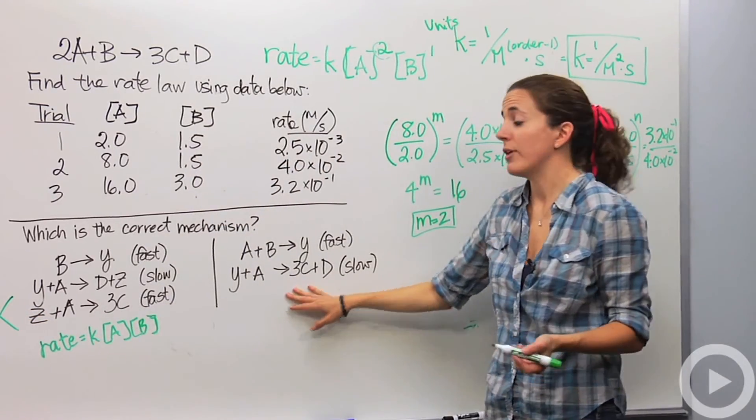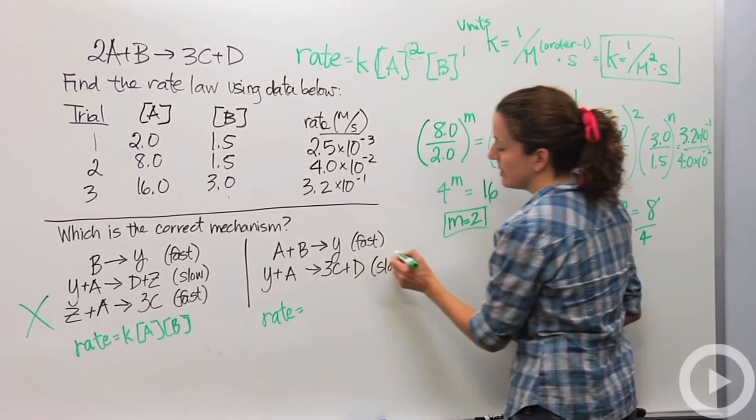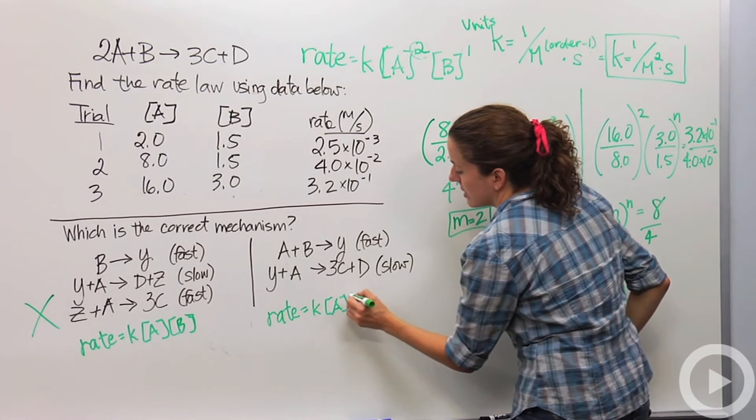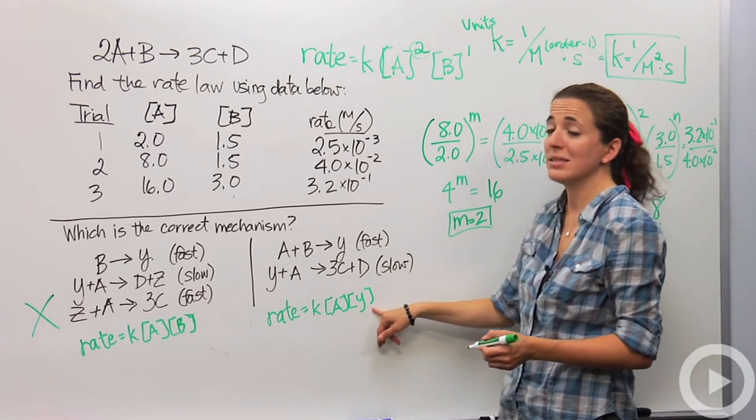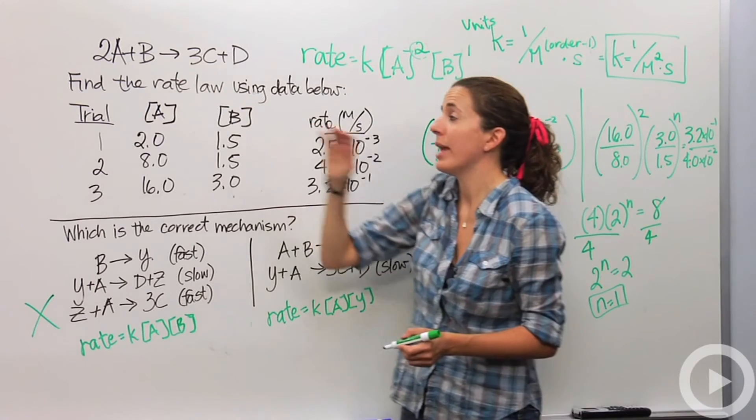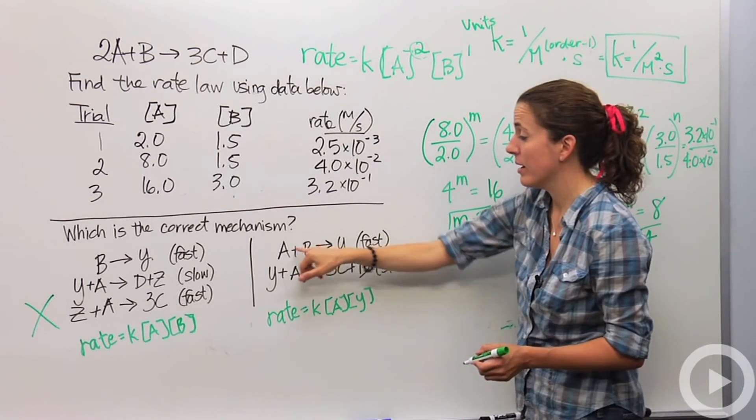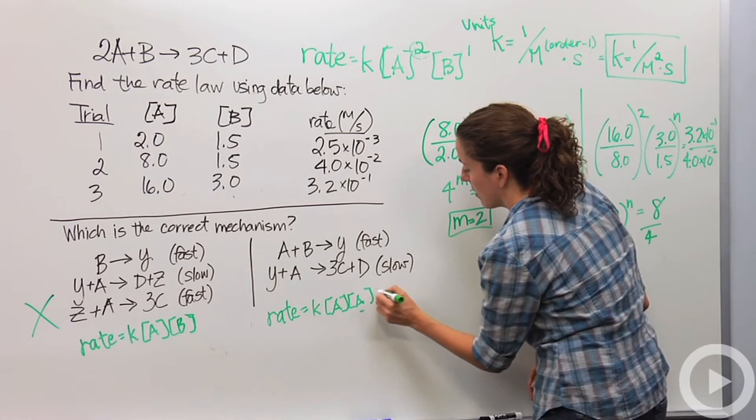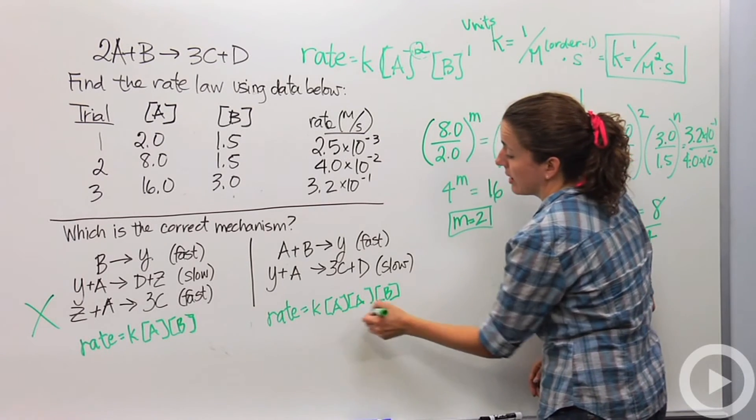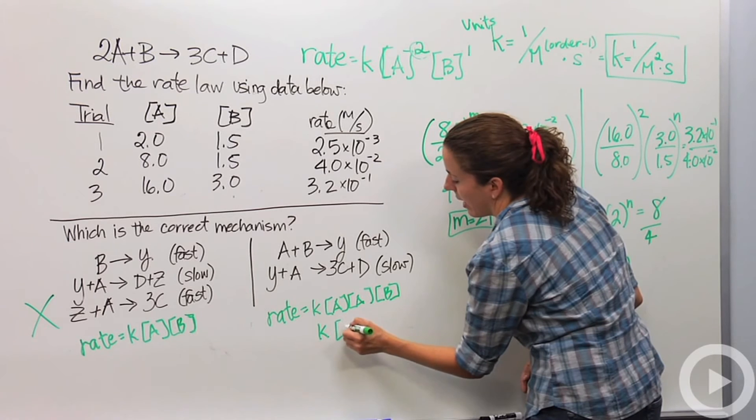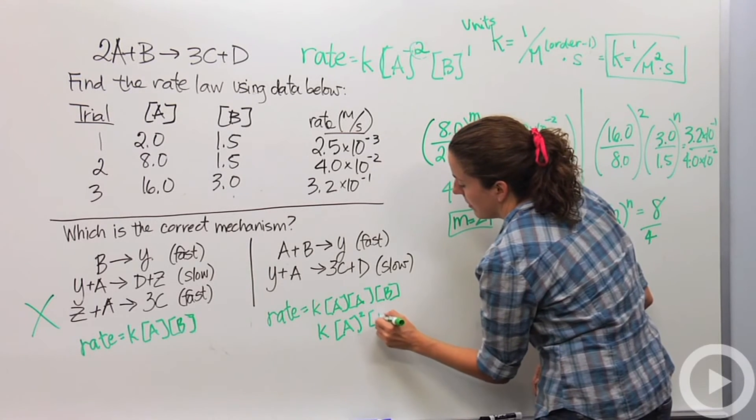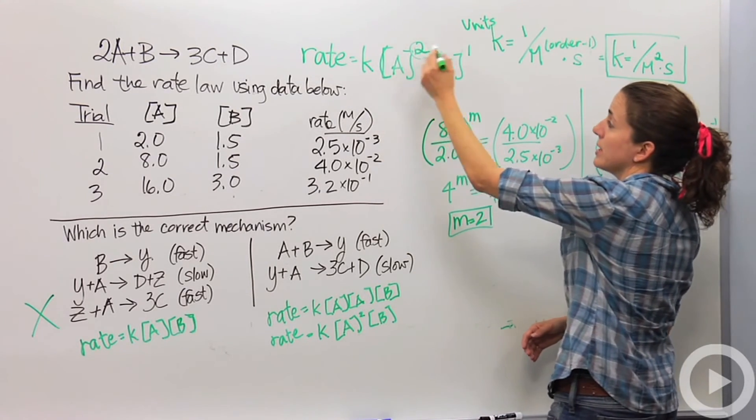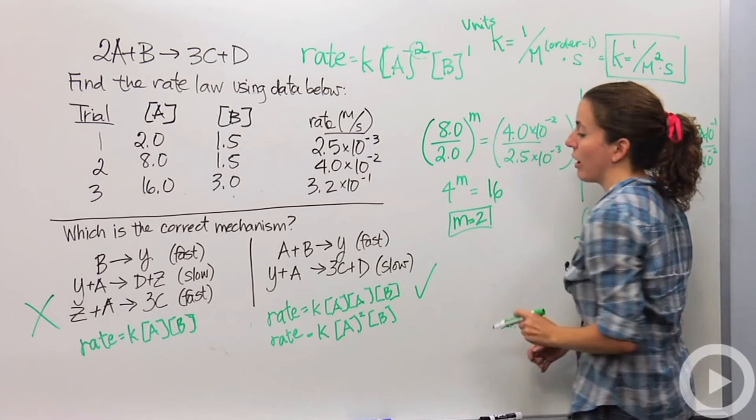So it must be this one, but let's prove it. Rate in this case is the slow step, so rate equals K times A times Y. Again, Y is in our rate law. I can't have Y in our rate law because it's not in our reaction. So I'm going to take Y, Y was formed here, and I'm going to change it to A times B. Then I can say K equals A squared B equals rate. And does this match our rate law? Rate equals K A squared B. Yes, this is right, so this must be the correct mechanism.